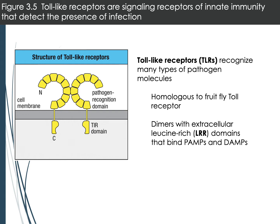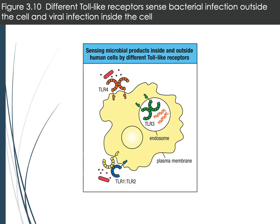The TIR domain can bind to other signaling proteins; these get phosphorylated and lead to translocation of transcription factors into the nucleus, causing gene expression changes. Memorizing every signaling pathway is not required, but if a pathway appears in a journal club paper, understanding it becomes important. Toll-like receptors are found both on the cell surface and inside the cell in the endosome — the structure formed during phagocytosis. TLRs in the endosome can bind material digested from pathogens or virally infected cells.